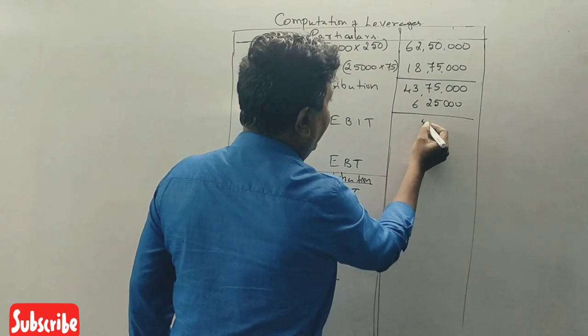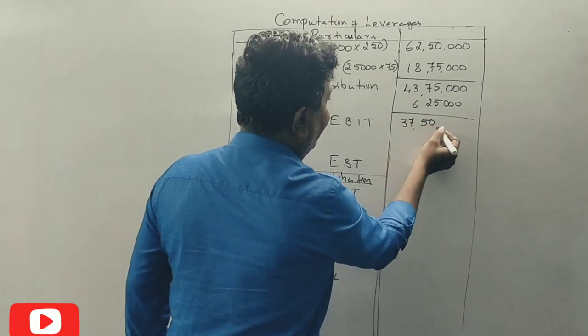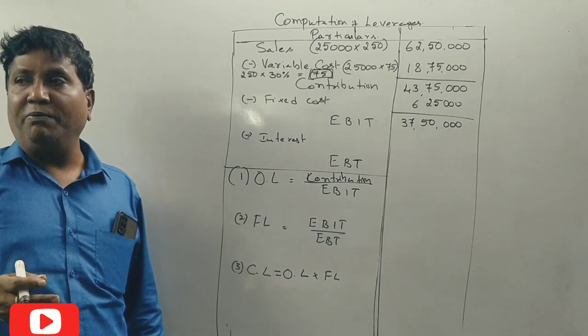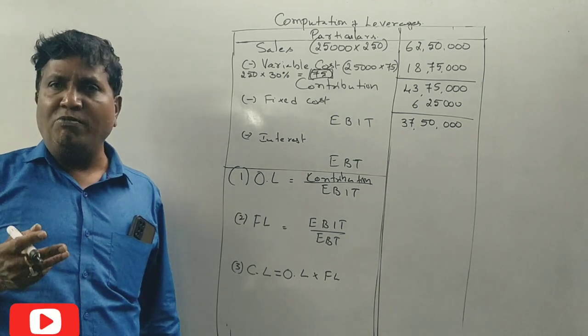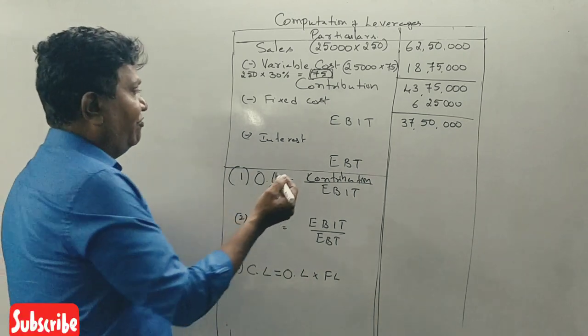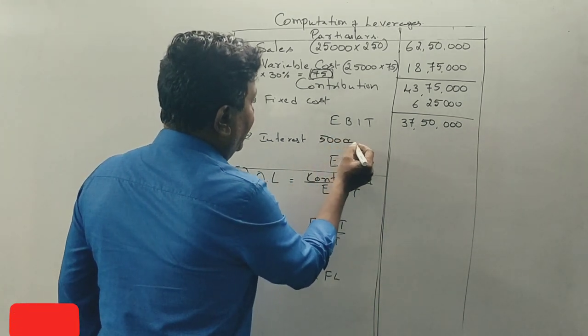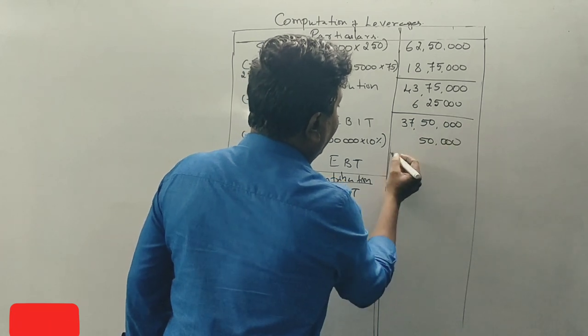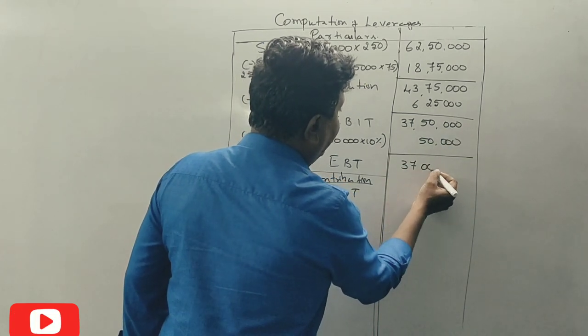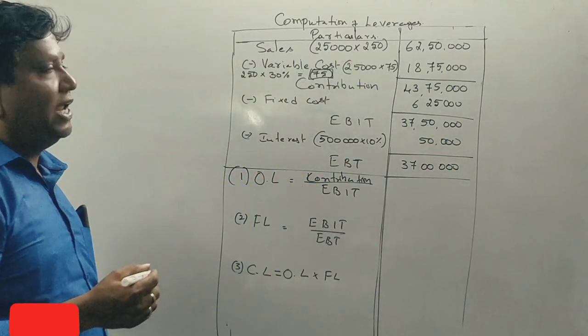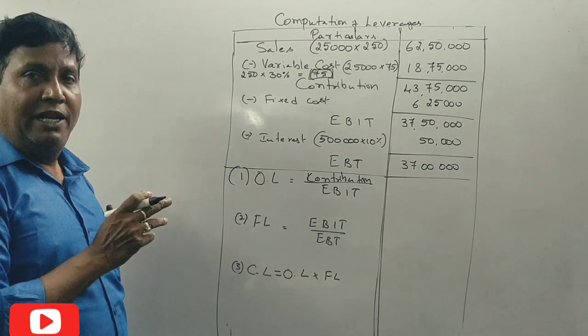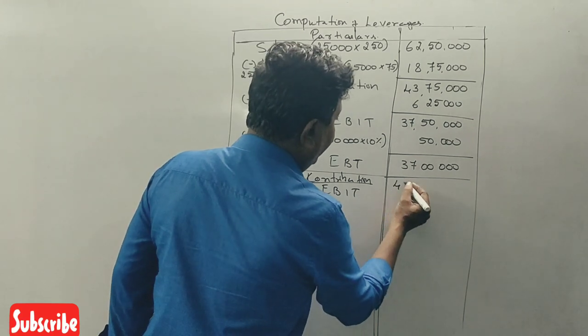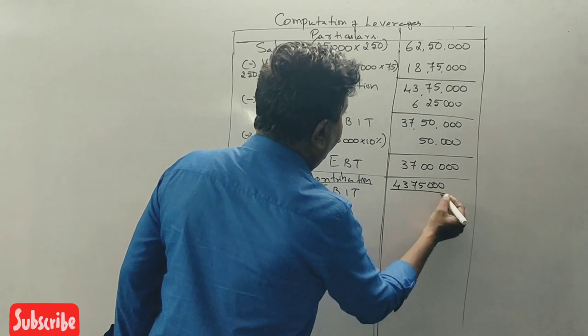EBIT is Rs. 37,50,000. Interest: how much debt we have taken? Rs. 5,00,000 at 10%. So Rs. 50,000.